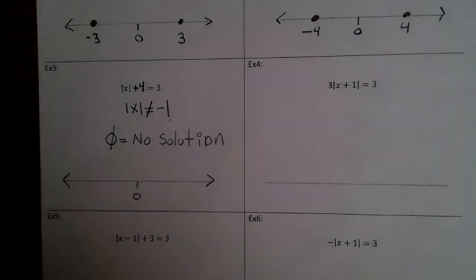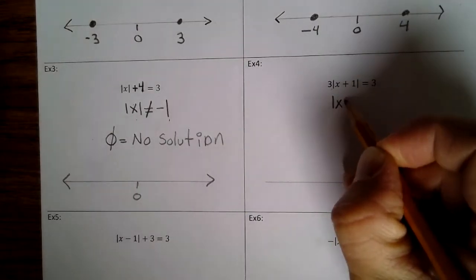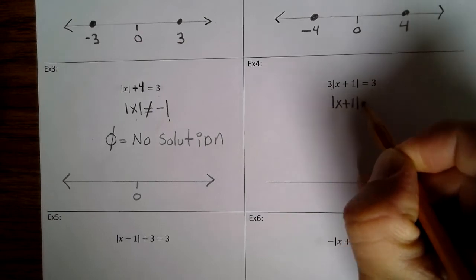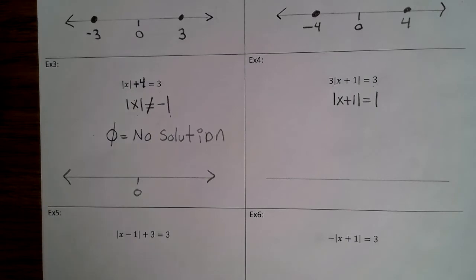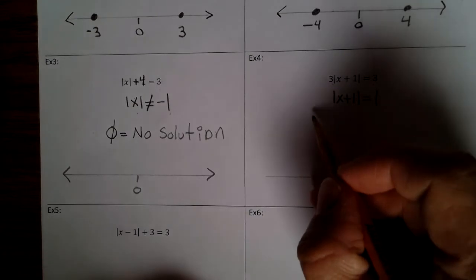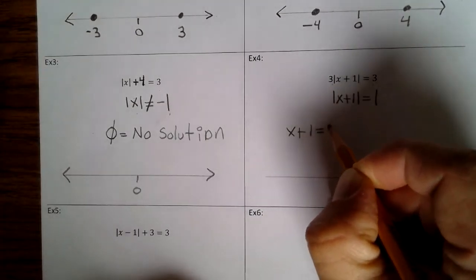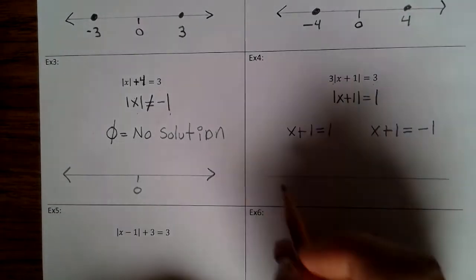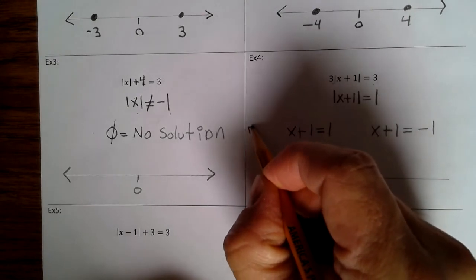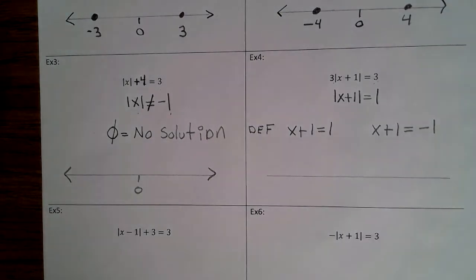All right, let's take a look at example 4. The first step is isolate the absolute value. We're going to divide both sides by 3, so you get the absolute value of x plus 1 equals 1. Now we're going to apply the definition. So x plus 1 equals 1, and x plus 1 equals negative 1. If you want, you can write DEF next to that because that's you applying the definition.